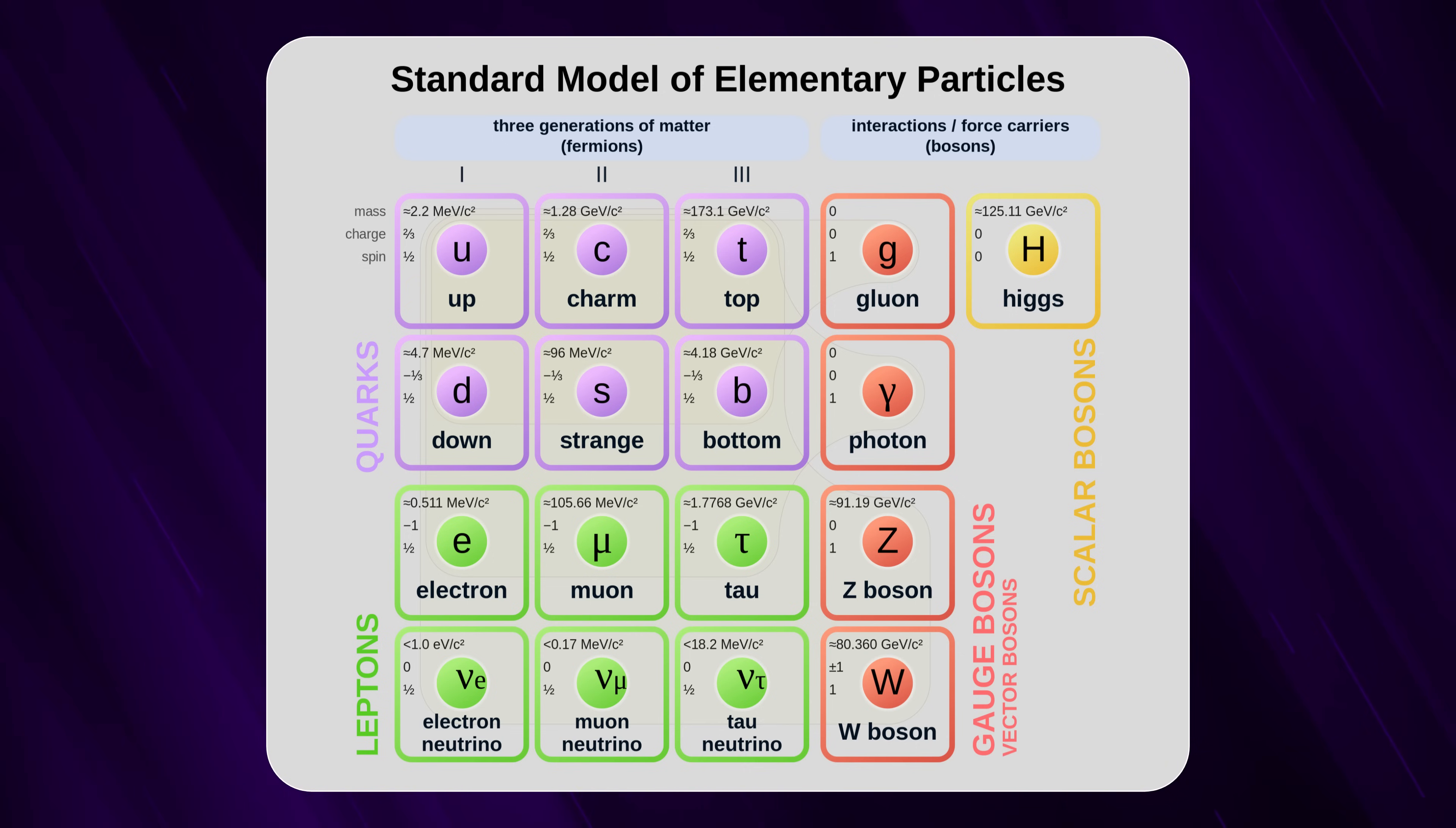It groups these particles into three main families. Quarks, we'll get to these superstars in a minute. Leptons, these include electrons, the tiny negatively charged particles that zip around the nucleus of an atom. And bosons, these are the messengers carrying the forces that make particles interact with each other, like the photon for light.